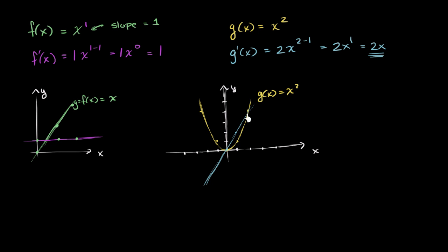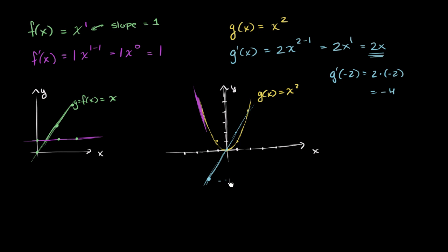Now does this make sense? If you look at this point on the parabola, you want to think about the slope of the tangent line. The tangent line looks like it has a reasonably high negative slope — it's definitely a steep negative slope. For x equal to negative 2, g prime of negative 2 is equal to 2 times negative 2, which is equal to negative 4. So this is saying the slope at that point is negative 4, and that looks about right — it's a fairly steep negative slope.